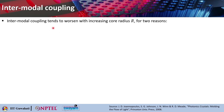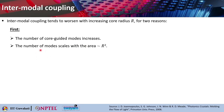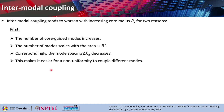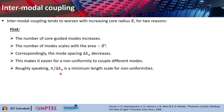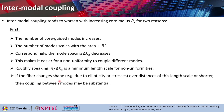Intermodal coupling tends to worsen with increasing core radius R for two main reasons. First, the number of core-guided modes increases — the number of modes scales with area, proportional to R² — and correspondingly the mode spacing delta·k_z decreases, making it easier for a non-uniformity to couple between different modes. Roughly speaking, pi/delta·k_z is a minimum length scale for non-uniformities. If the fiber changes shape — due to ellipticity or stresses that slightly bend the curvature — over a distance of that length scale or shorter, the coupling between modes becomes substantial.